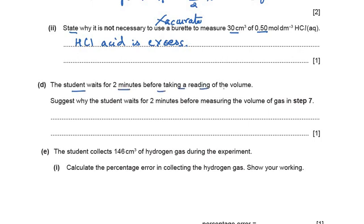A student waits for 2 minutes before taking a reading of the volume of gas in Step 7. The reason is that the reaction is exothermic, so the volume of gas produced may be at a higher temperature, which would give an inaccurate (higher) volume reading. To bring the gas down to room temperature, the student waits 2 minutes.